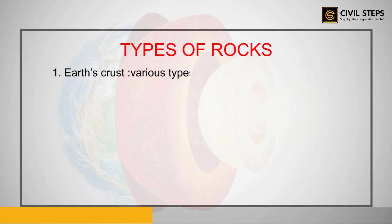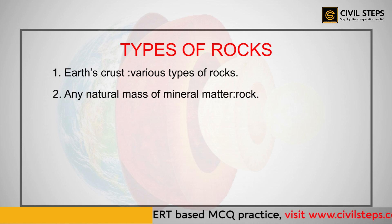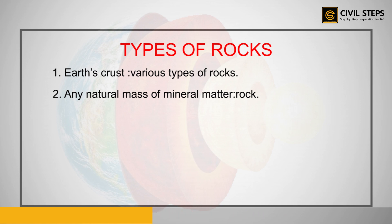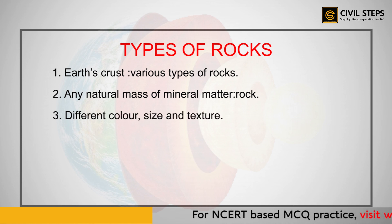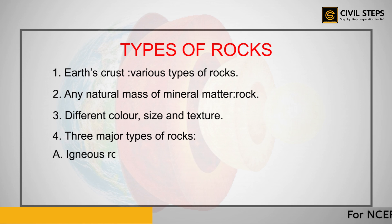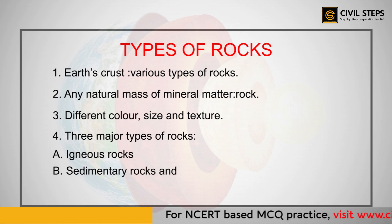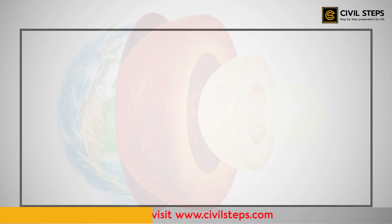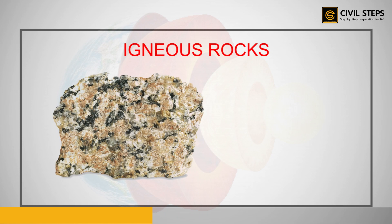The Earth's crust is made up of various types of rocks. Any natural mass of mineral matter that makes up the Earth's crust is called a rock. Rocks are made up of different minerals and can be of different color, different size, and may even vary in texture. On the basis of these characteristics, rocks are divided into three major types: igneous rocks, sedimentary rocks, and metamorphic rocks.